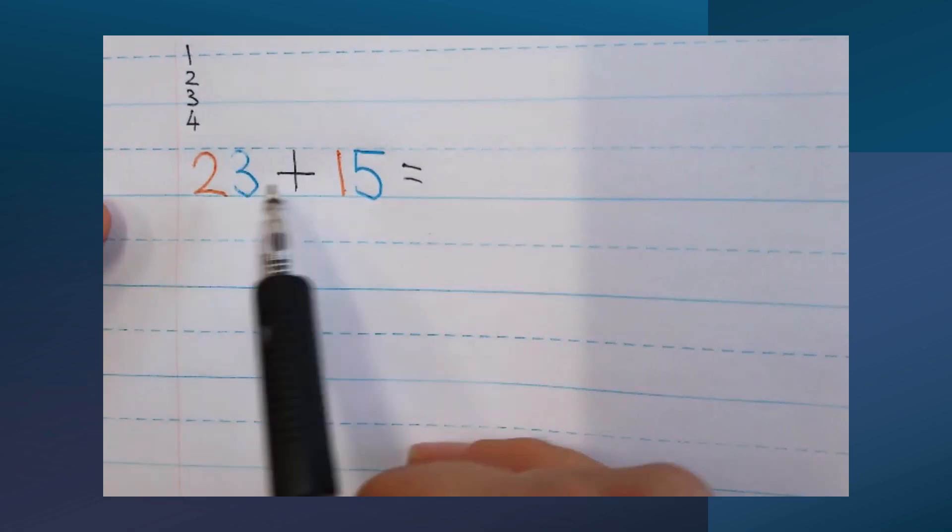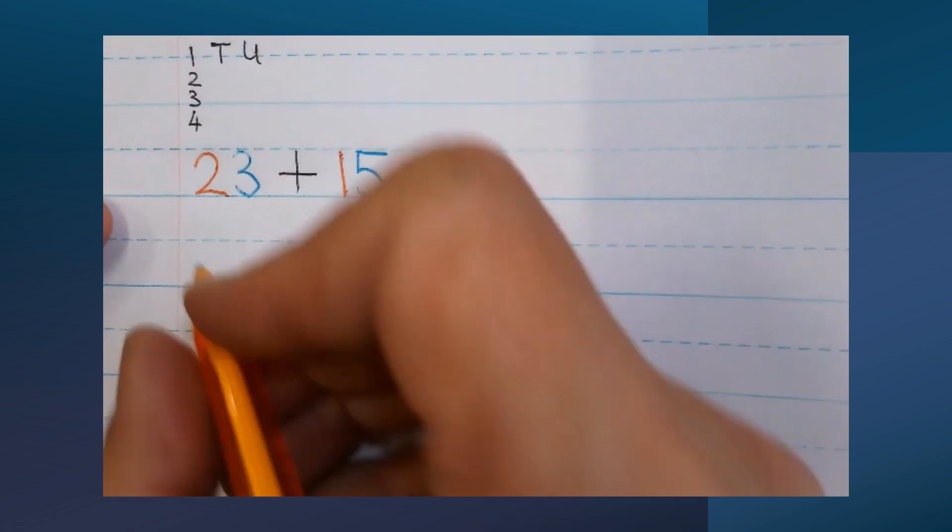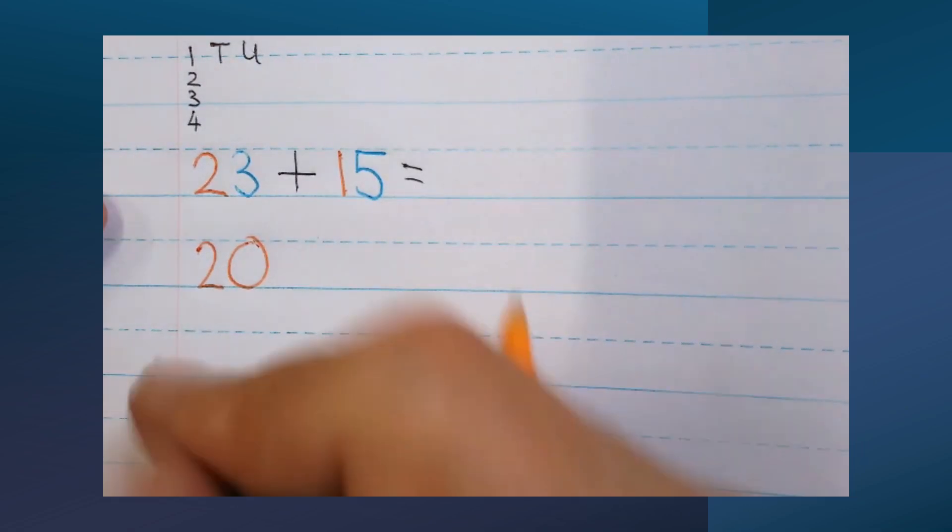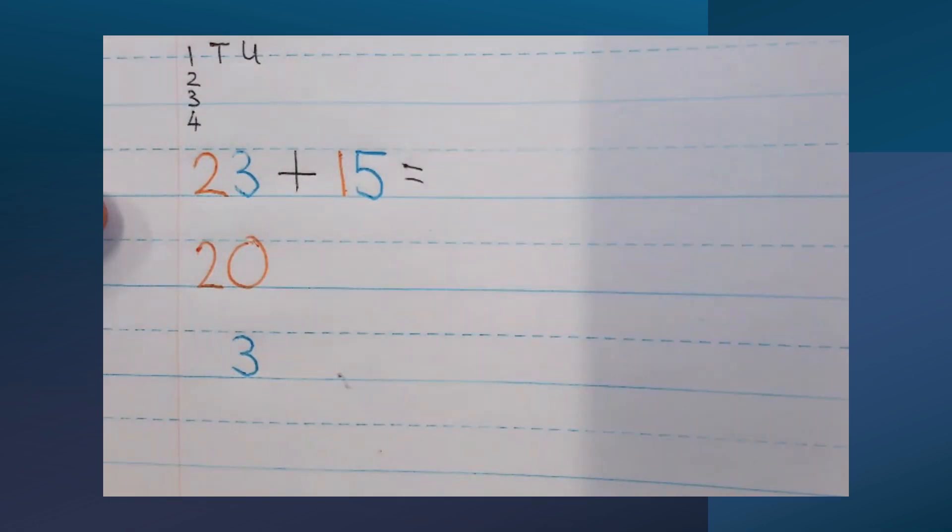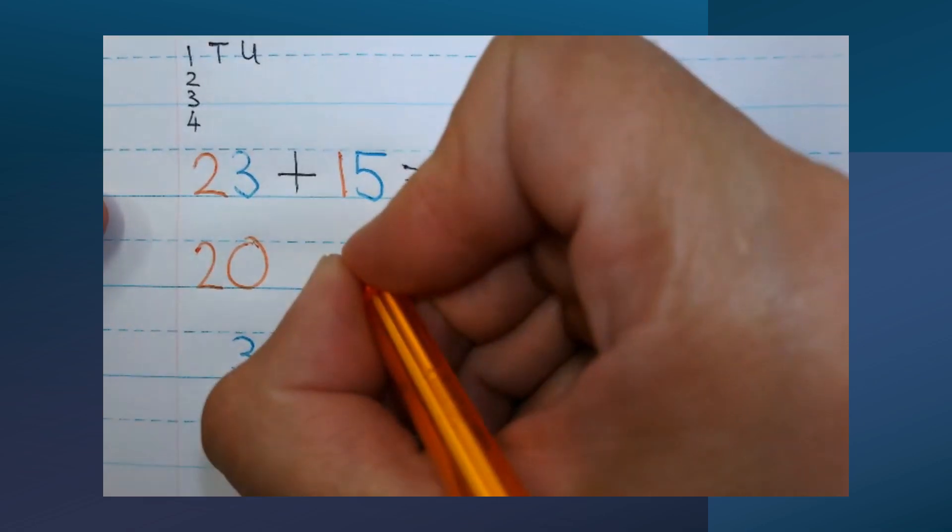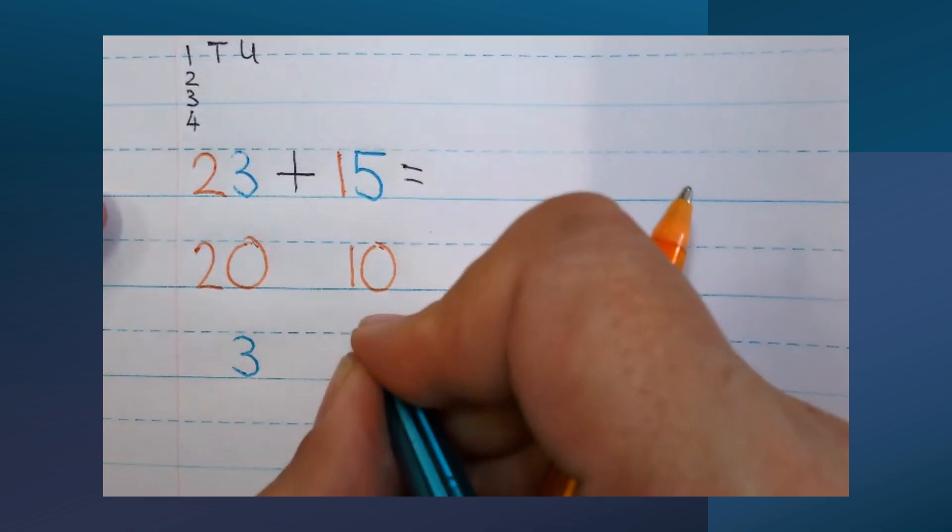Our sum we're going to do is 23 plus 15. The first step is breaking the numbers up into tens and units. So I use the number they give me, 23. I'm going to break it up into tens and units, so it will be a 20 and a 3. My next number is 15. If I break that up I will get a 10 and a 5.